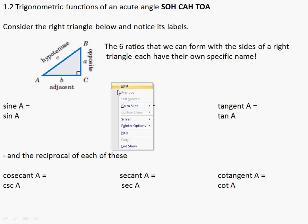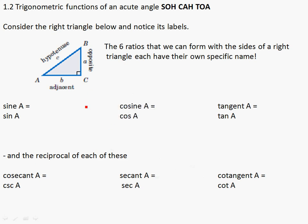Trig functions and how they're defined. The six ratios you can form with the sides of a right triangle each have their own specific name. You already know about sines, cosines, and tangents and then the reciprocals. If you struggle with this, SOHCAHTOA is a helpful memory aid: S stands for sine, O for opposite, H for hypotenuse.